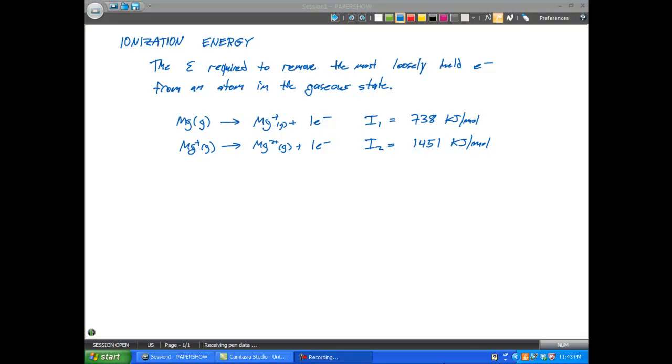One thing I want to point out here when discussing ionization energy. The first ionization energy is the energy required to remove one electron from, in this case, magnesium. The second ionization energy is the energy required to remove one electron from magnesium plus. It is not the amount of energy to remove two electrons. That would be the sum of each of these ionization energies.